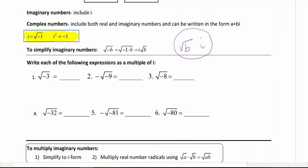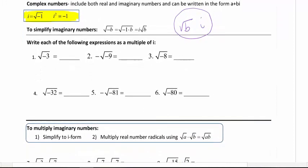Looking at our first group of examples — the first thing you have to do is take the imaginary part out, and then if you can simplify anything else, you will. For number 1, we have square root of negative 1 times 3. The square root of negative 1 gives us i. They're going to write it in that form. A lot of times you'll see me write it as square root of 3 times i — make sure the i is not underneath the radical.